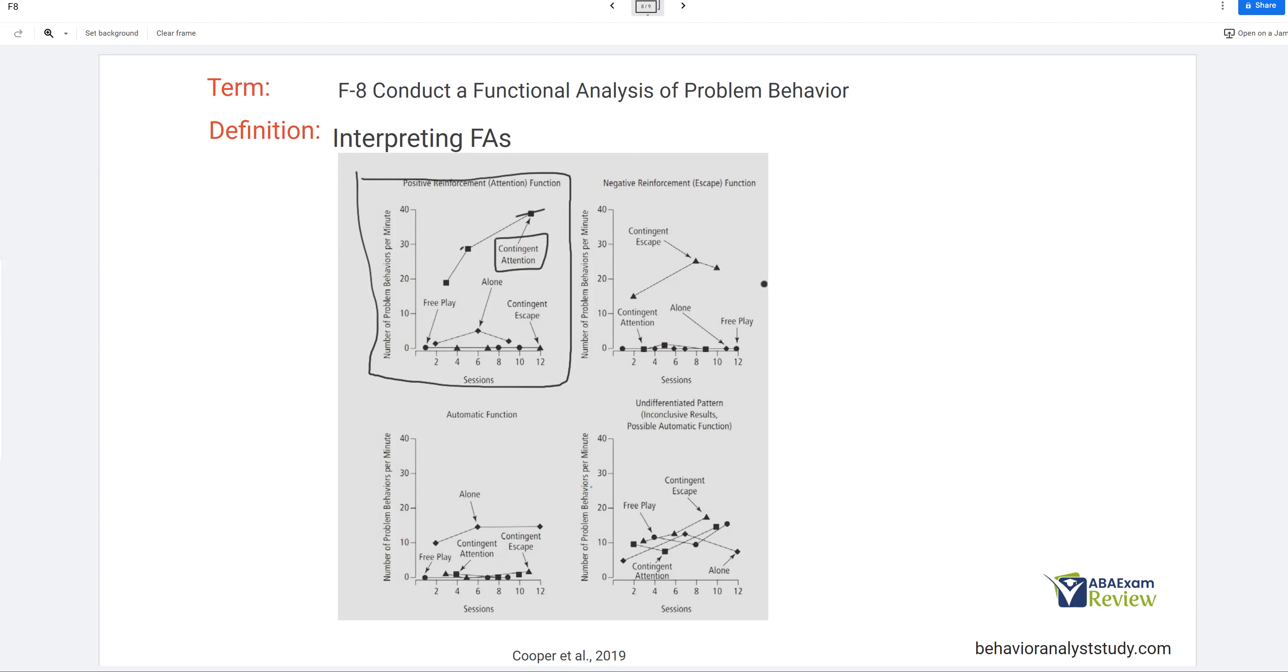What about escape? Well, same thing. We were giving task demands. When behavior occurred, we gave breaks. And you can see that behavior is occurring at the highest rate in escape. Now, automatic. During the alone condition, the behavior happened the most. And so, these three graphs are very nice and tidy. So, what happens if there's no real pattern? So, inconclusive results like this. Well, it's not really clear, right? The behavior is just happening all over the place. There's a possible automatic function if all the conditions seem to be getting the behavior. If you have, let's say, just the contingent escape and contingent attention, well, behaviors can function for multiple reasons. So, you're going to have to be really smart about how you analyze and interpret your data and when you determine the function, because that's how you're going to treat the behavior ultimately.